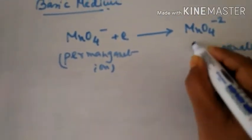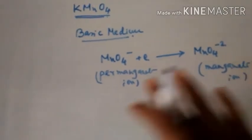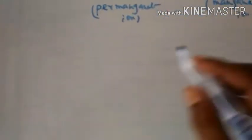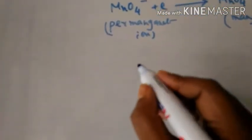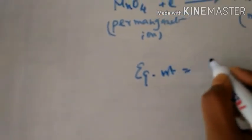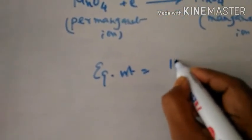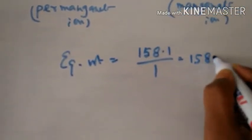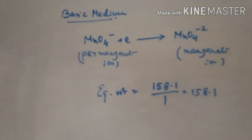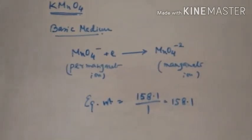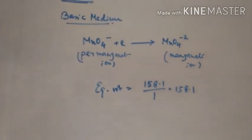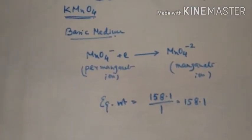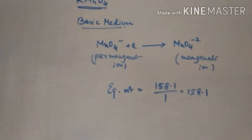It gains only one electron. Calculating its equivalent weight, we get 158.1 divided by 1, which equals 158.1. From this video, you can understand that in different mediums, potassium permanganate gives different equivalent weights.